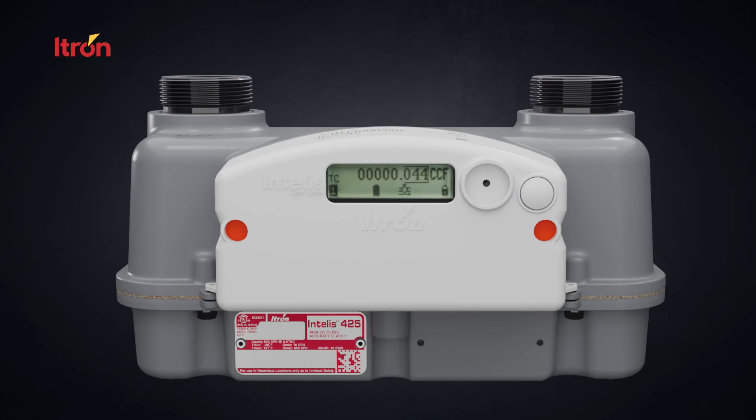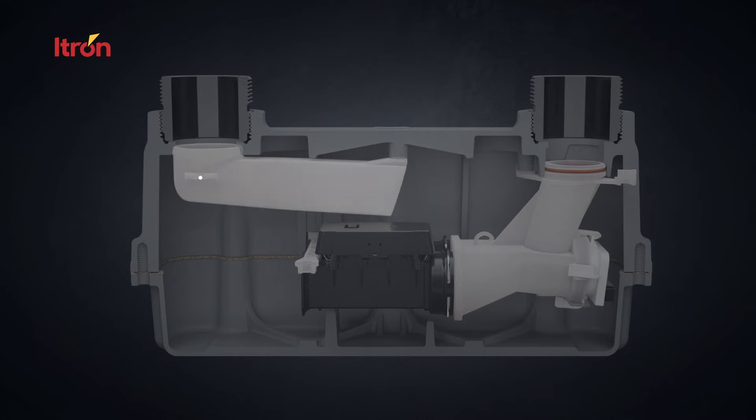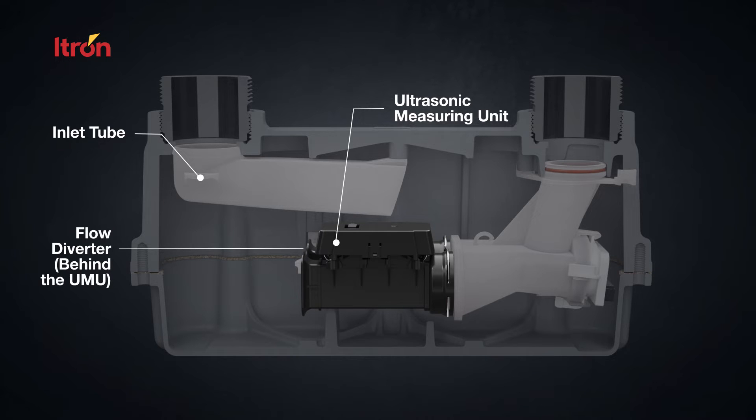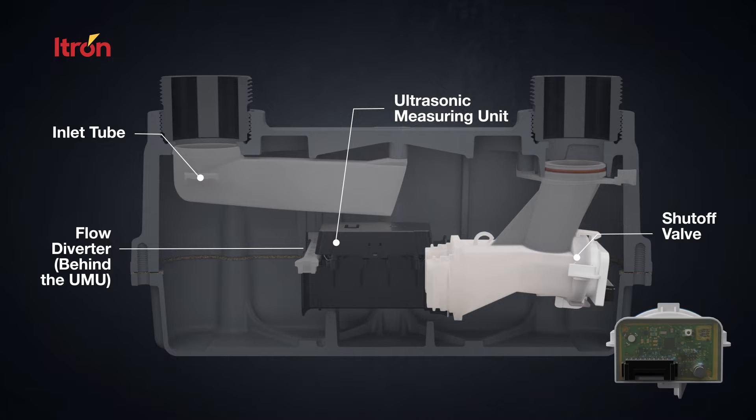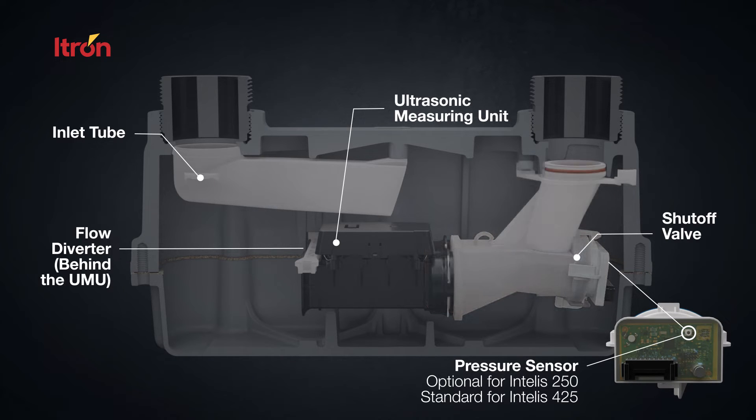This higher capacity INTELIS 425 gas meter is uniquely designed. The 425 meter and the 250 meter use the same UMU and valve. When a 250 meter is purchased without pressure sensing, the pressure sensor is not placed on the index or valve circuit board. This pressure sensor on the valve circuit board measures the absolute pressure.